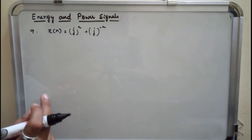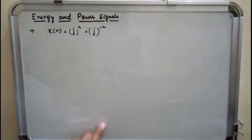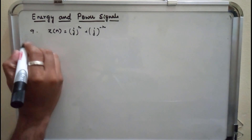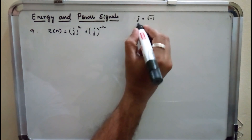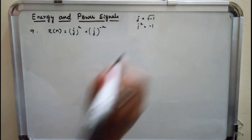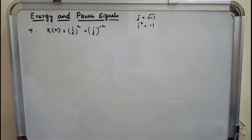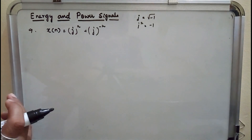In this question, x of n is defined to be j^n plus j^(-n), where j is a complex quantity — j is the root of minus 1, and j squared equals minus 1. First, I need to know whether this is a periodic signal or a non-periodic signal, so I can decide whether to check the energy or the power of the signal.